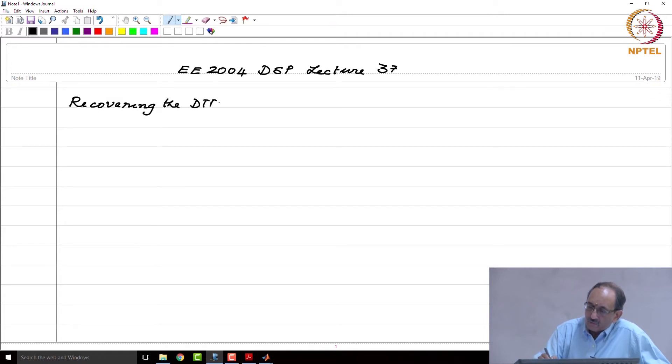So, recovering the DTFT from the DFT. Again, this should make sense because we have an n-point sequence and we have sampled it at n points in the frequency domain.